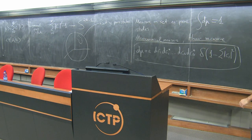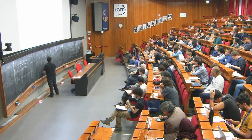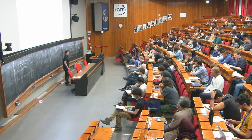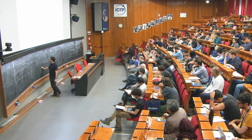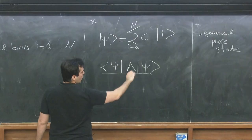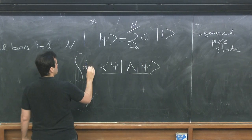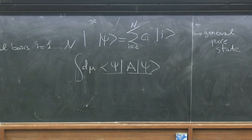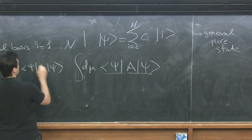We will now take the observable A and calculate the statistical properties of its expectation value over the set of pure states. The first quantity to calculate is the average of ⟨ψ|A|ψ⟩ over all possible pure states — which I'll also denote ⟨⟨ψ|A|ψ⟩⟩.